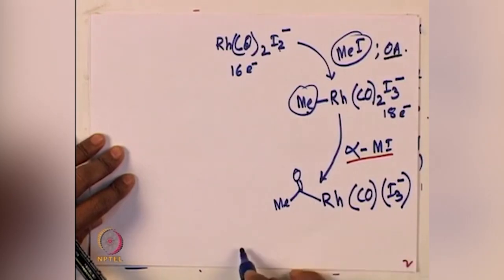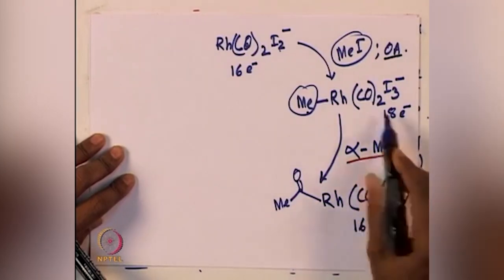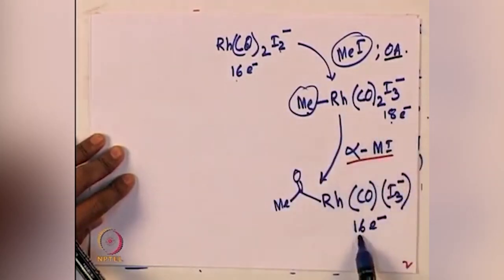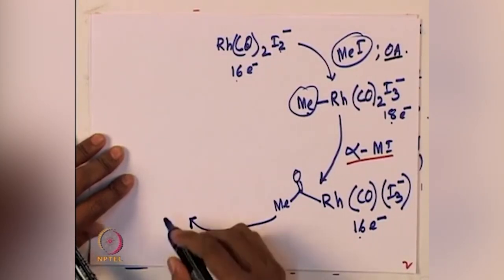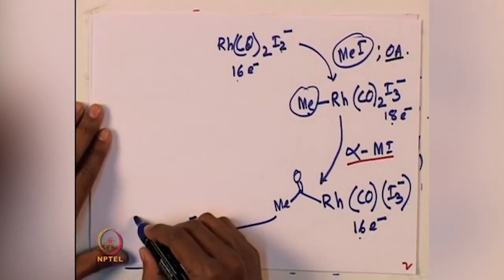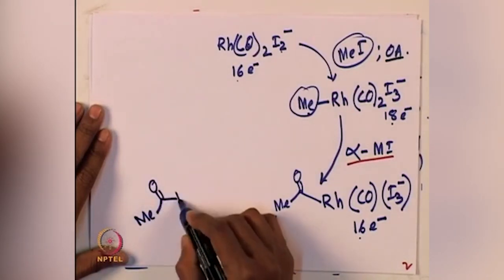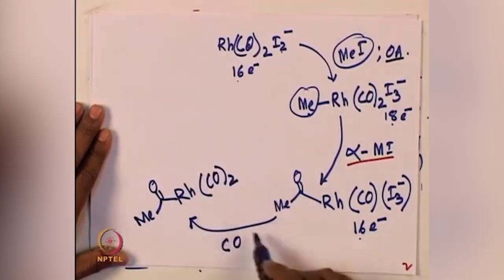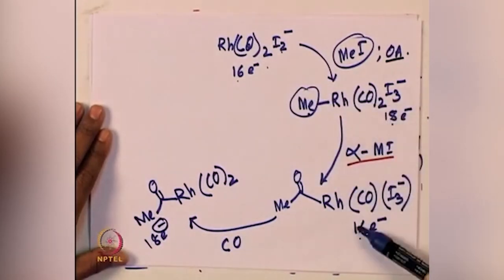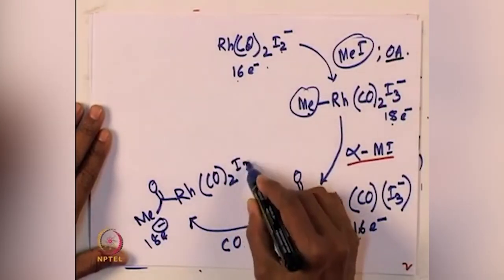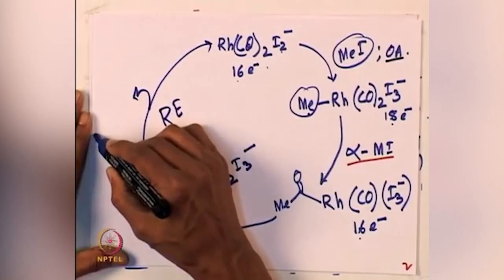After alpha migratory insertion you have a 16-electron species. Oxidative addition takes you from 16 to 18 electrons; alpha migratory insertion takes you from 18 to 16 electrons. Further, carbon monoxide interacts with the metal complex — these reactions are done under a carbon monoxide atmosphere. One more carbon monoxide coordinates to give you back the 18-electron species. So the pattern is: 16 to 18, 18 to 16, 16 back to 18 electron species, and you have I3 minus. From there, reductive elimination will give you CH3COI.